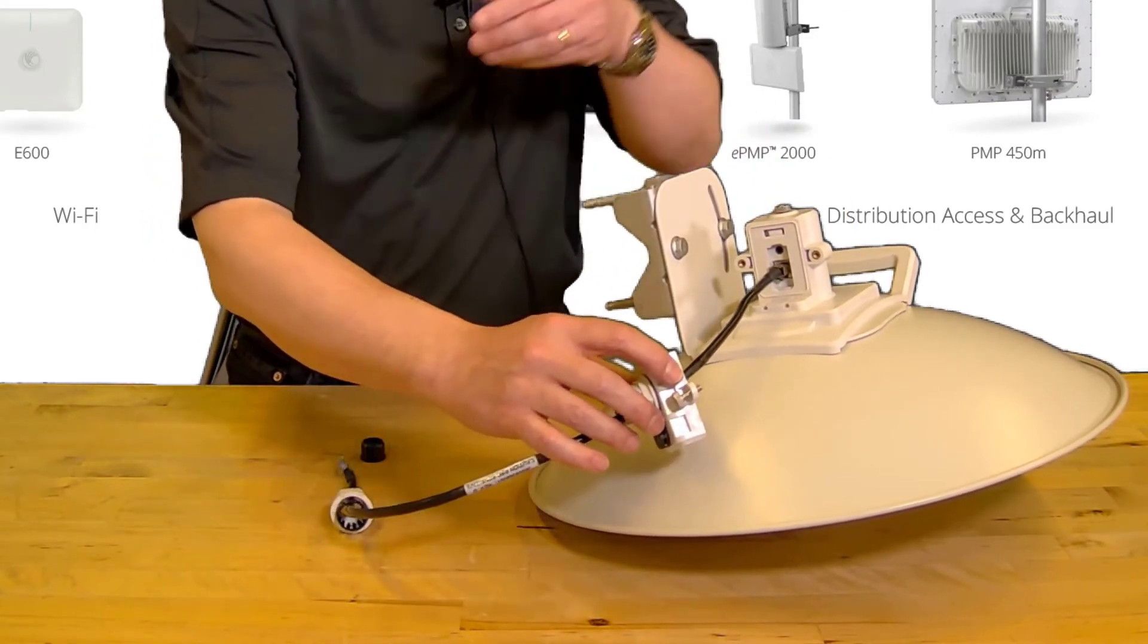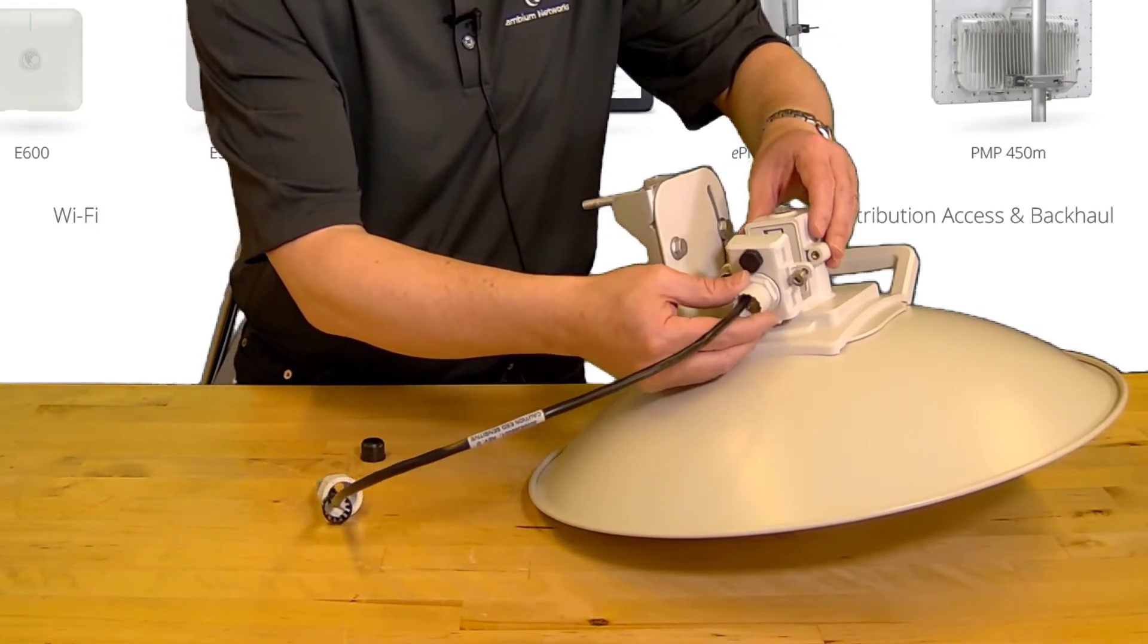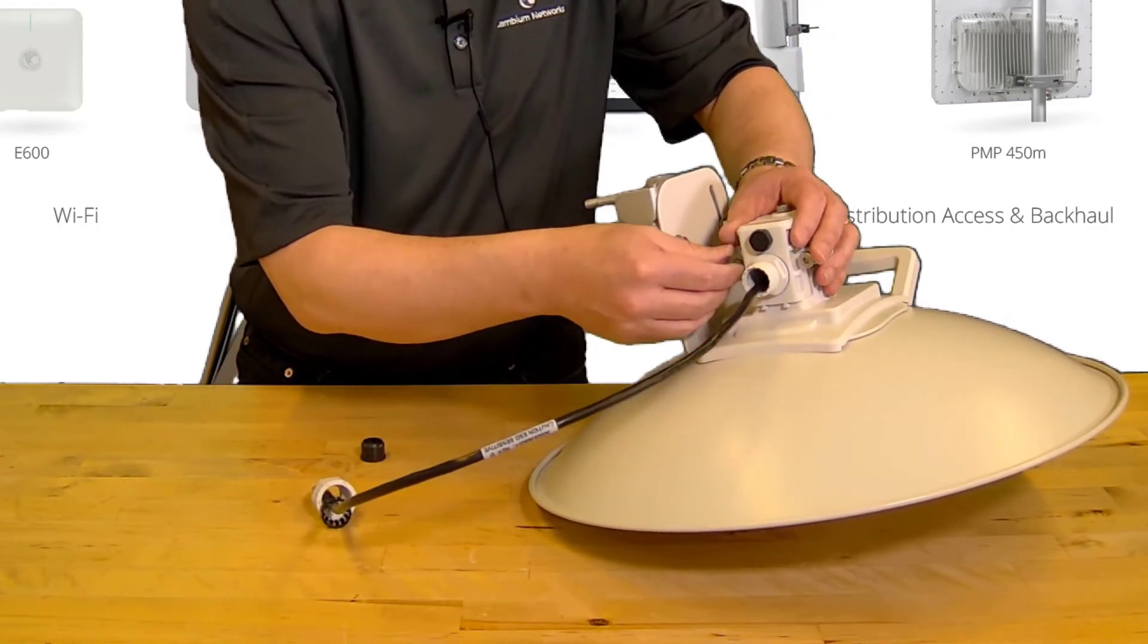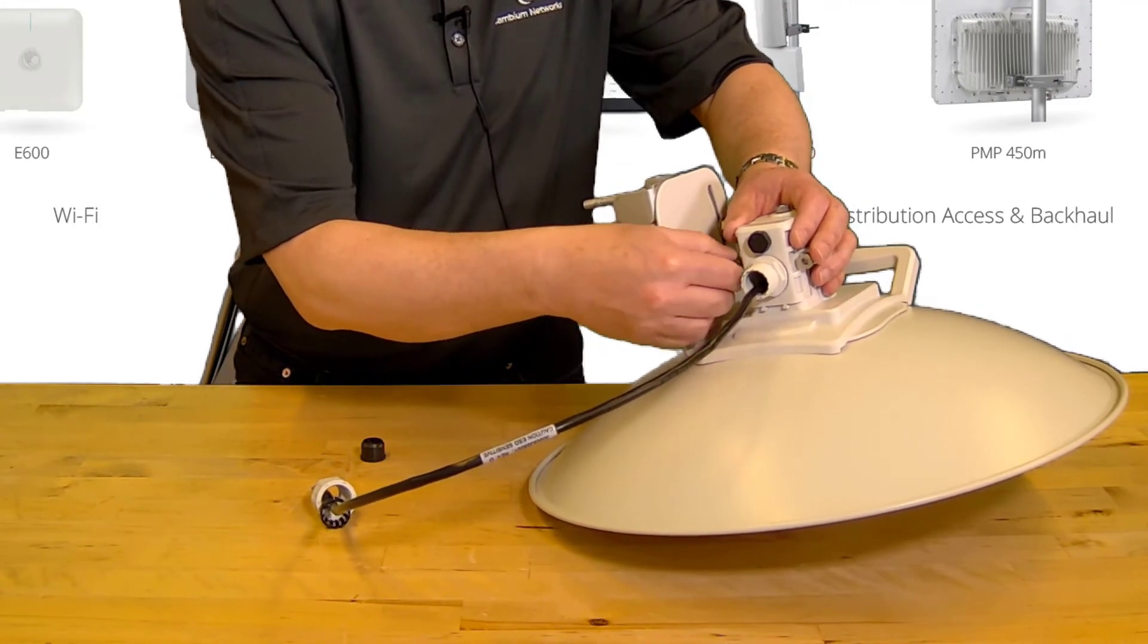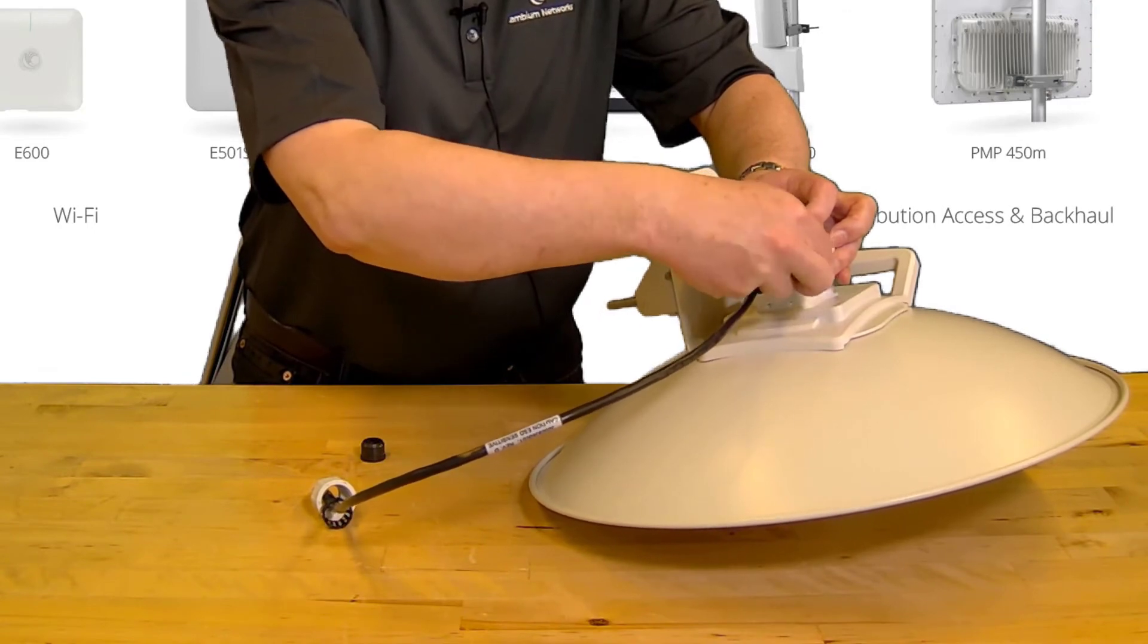Loosely install the sealed cable cover. Engage the built-in locating guides and slide the cover into place. Tighten the captive screws a few turns with the M5 hex driver to keep the cover in position.